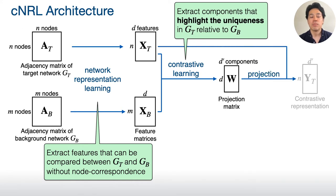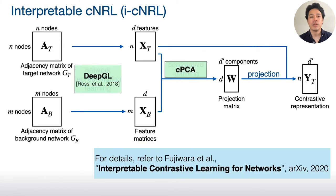Lastly, by using the projection matrix, we can project the target network into a low dimensional space. For interactive visual analytics, providing interpretability is critical. Thus, we employ an interpretable version of contrastive network representation learning, which uses deepGL and contrastive PCA as learning methods. Please refer to our other work for details.